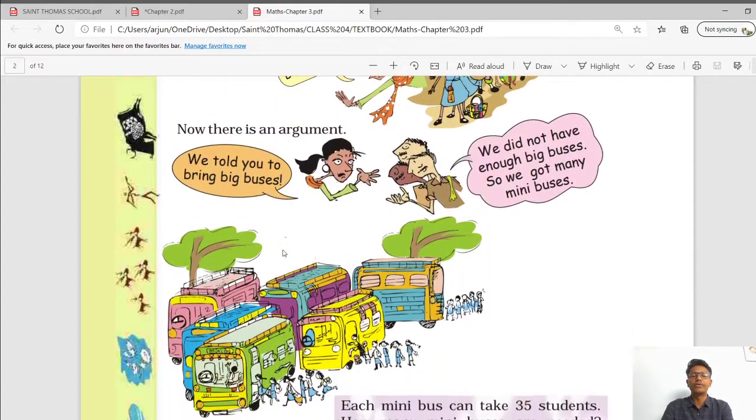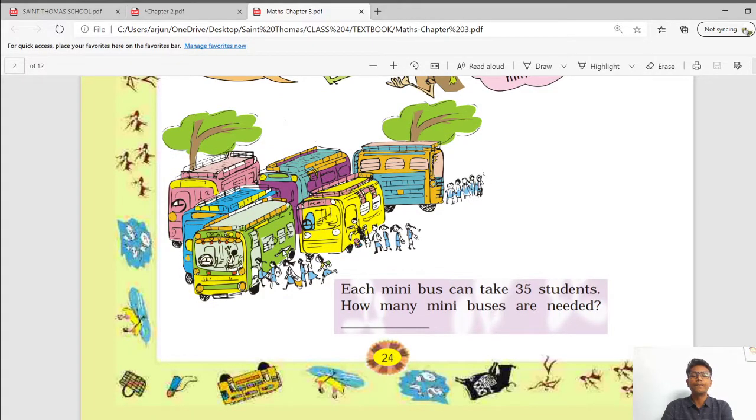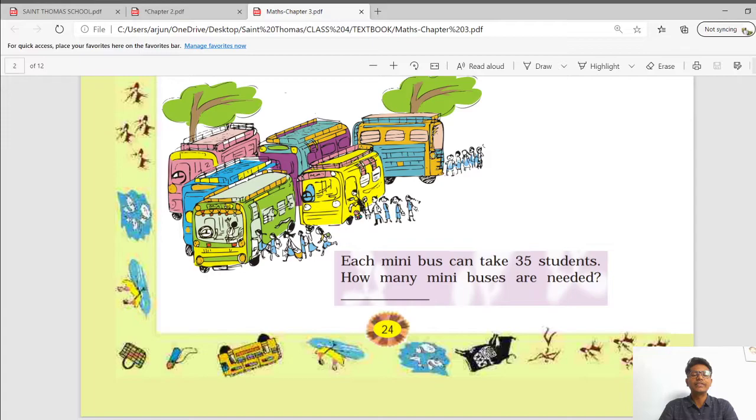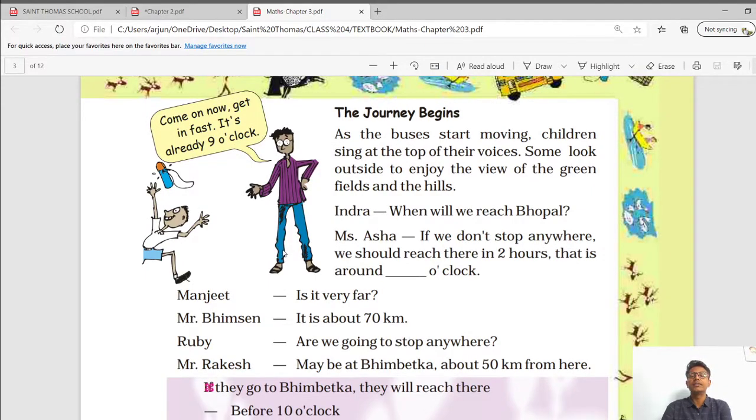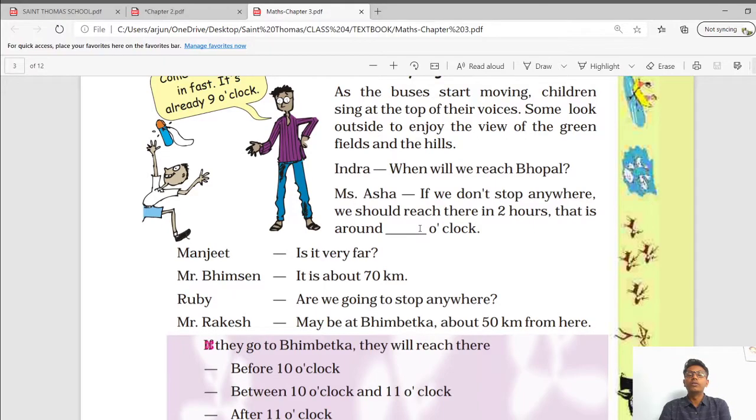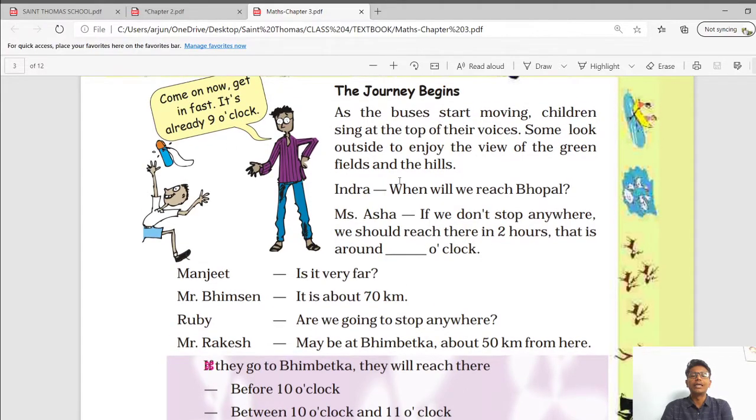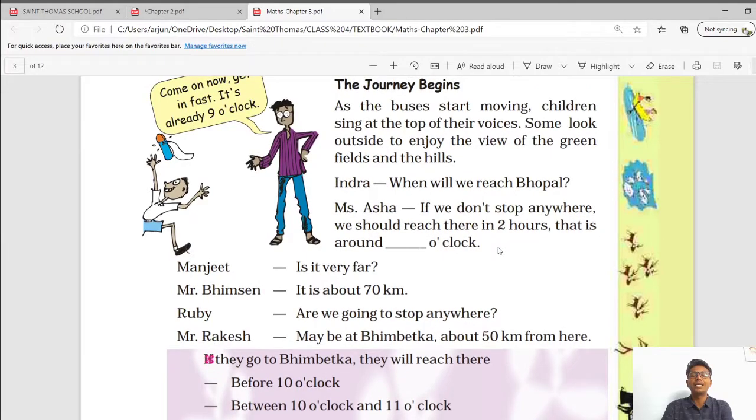This is the story which we have covered. No need of revision in that. Each minibus can take 35 students. How many buses are needed? You have to just simply divide it. Now, here we have seen something revolve around timing. For example, they have started the trip at 9 o'clock. They reached. If they don't stop anywhere, we should reach there in 2 hours. That is around dash o'clock. First is 9 o'clock. And they will reach after 2 hours which is equal to 11 o'clock. This type of question can be asked.